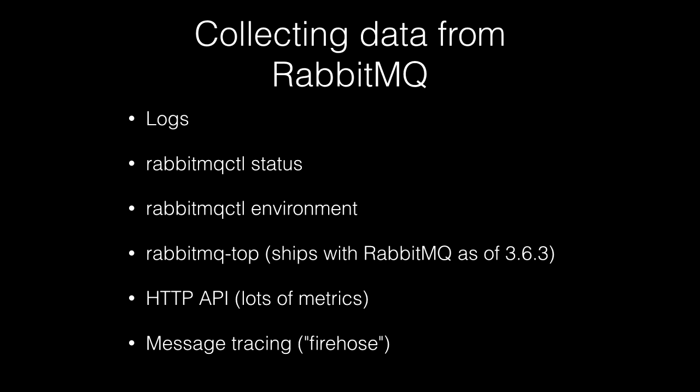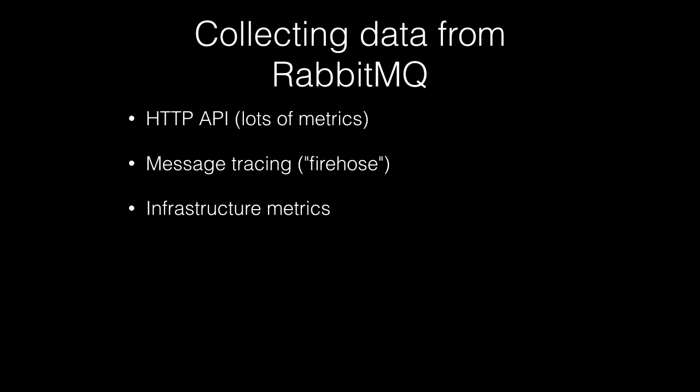There is also a way to trace messages — we call it the firehose. It introduces a lot of load on the system, but you can enable it and use a regular RabbitMQ consumer to log every single message that flows through the system. It has very significant resource usage effects, but sometimes you just need it. Finally, infrastructure metrics are also relevant — sometimes a node issue turns out to be that the node needs to sync from scratch from another node, visible in traffic flows.